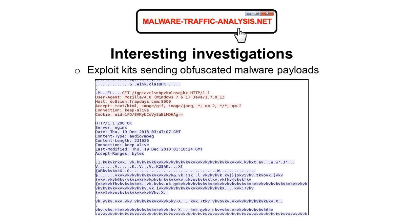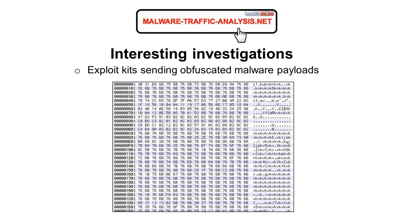Here's another one from December 2013. This is the old Neutrino exploit kit. The malware payload is XORed with 'vk' — lowercase v, lowercase k. So you can XOR with a string of ASCII characters, not just a single byte. You extract the payload from Wireshark, export it, use another Perl script a coworker helped me work on, XOR it, and there's your malware payload.